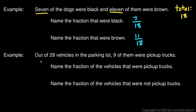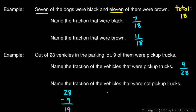Out of twenty-eight vehicles in a parking lot, nine were pickup trucks. The fraction that were pickup trucks is nine twenty-eighths. The fraction that were not pickup trucks is a bit trickier: twenty-eight minus nine gives us nineteen, so nineteen twenty-eighths of the vehicles were not pickups.